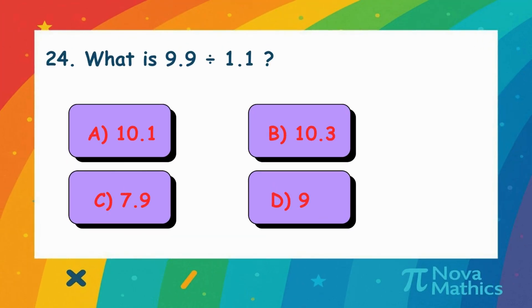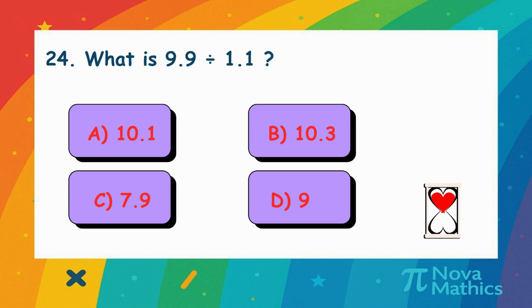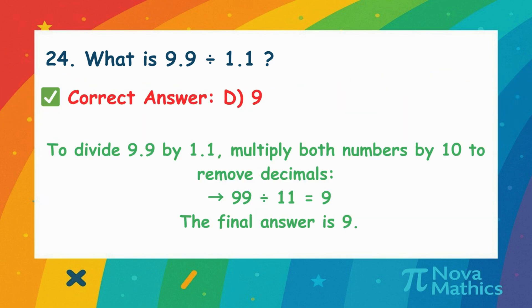23. What is 9.9 divided by 1.1? We want to divide 9.9 by 1.1. Multiply both by 10 to make them whole numbers. 99 divided by 11 equals 9.